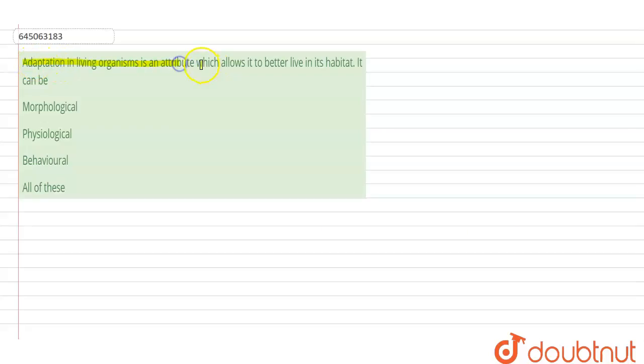that the adaptation in living organisms is an attribute which allows it to be real. So here we can mark option number four as the right answer, but along with this we are going to see certain examples of